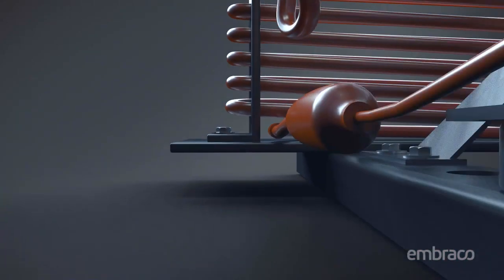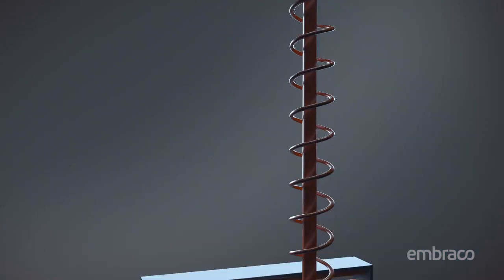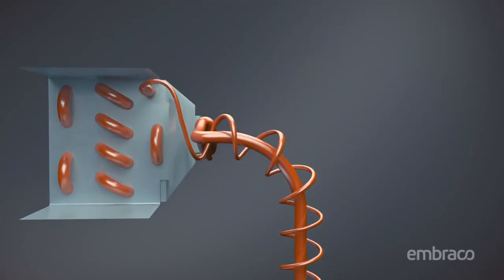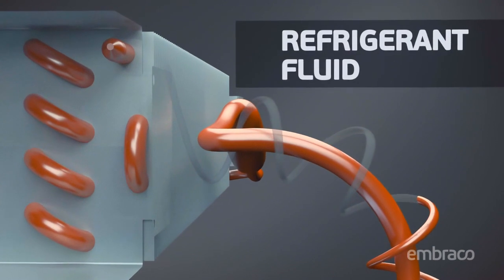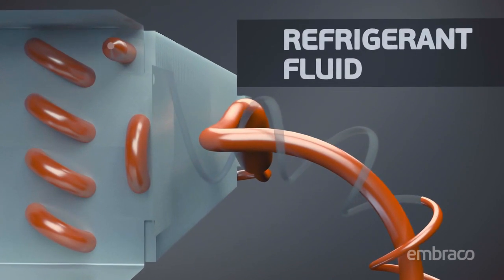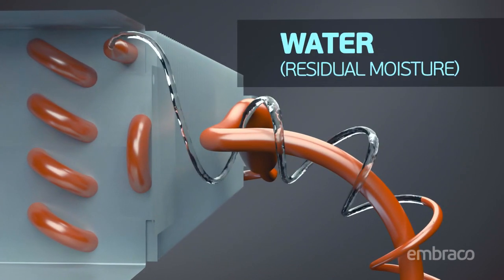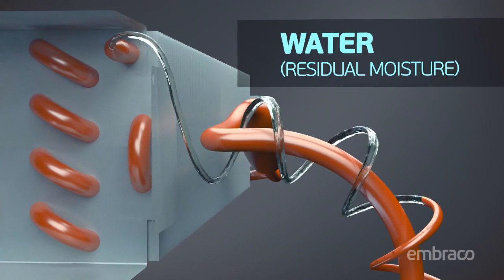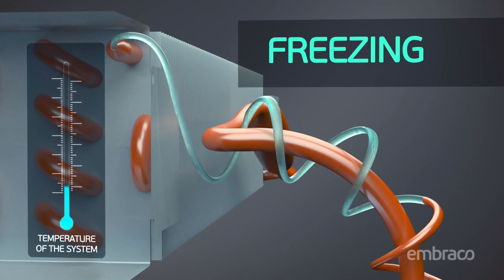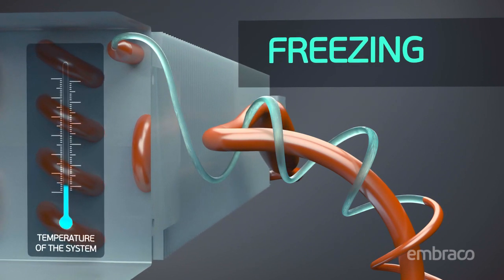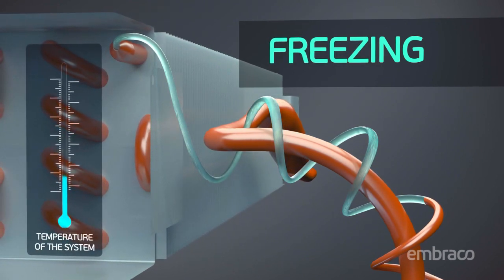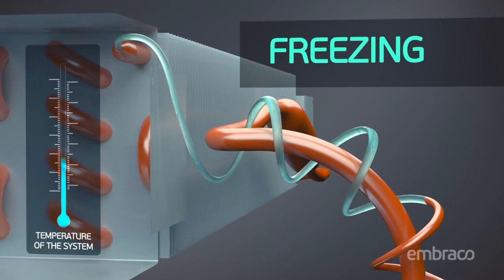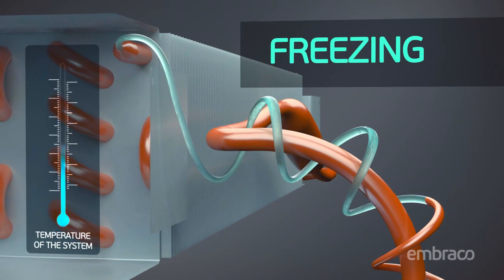See below what can happen. In the refrigeration system capillary tube, clogging will occur due to residual moisture freezing in the small passage. The capillary will be blocked and the refrigerator will stop operating properly and heat up.